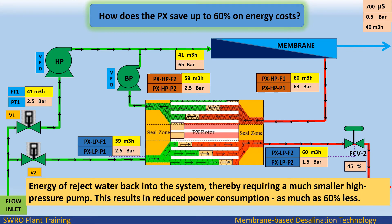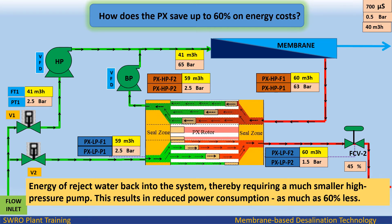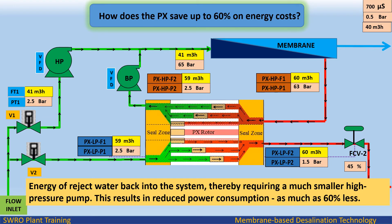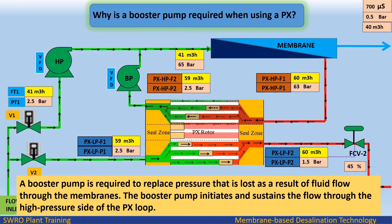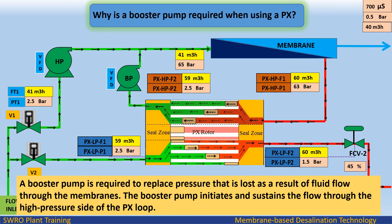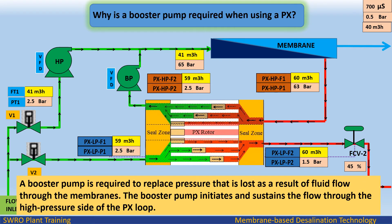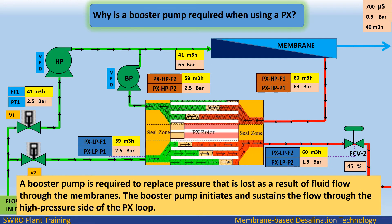The PX saves up to 60% on energy costs by recycling the energy of reject water back into the system, thereby requiring a much smaller high-pressure pump. This results in reduced power consumption — as much as 60% less. A booster pump is required when using a PX ERD to replace pressure lost due to fluid flow through the membranes. The booster pump initiates and sustains flow through the high-pressure side of the PX loop.